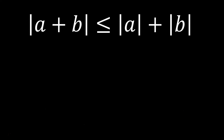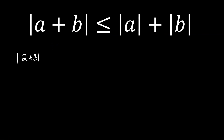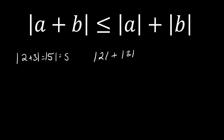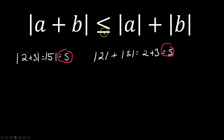Now we have the famous triangle inequality: the absolute value of a plus b is less than or equal to the absolute value of a plus the absolute value of b. For example, with 2 plus 3: the absolute value of 5 is 5 on the left side. On the right side independently, absolute value of 2 plus absolute value of 3 equals 2 plus 3, which is also 5. So in this case both sides equal 5, and the equal to part of the symbol is relevant.